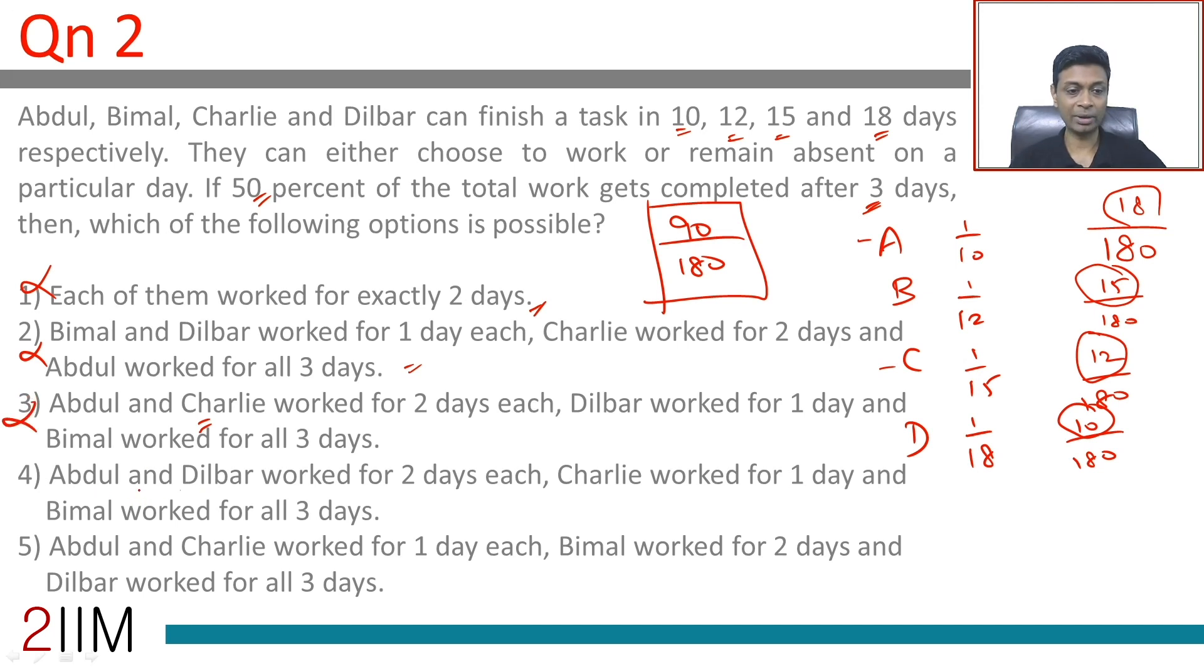Abdul and Dilbar, come back to this. Abdul and Charlie worked for 1 day each, that is 30. Bimal worked for 2 days, that is 30. Dilbar worked all 3 days, that is 30. 30 plus 30 plus 30, 90, we have a winner.